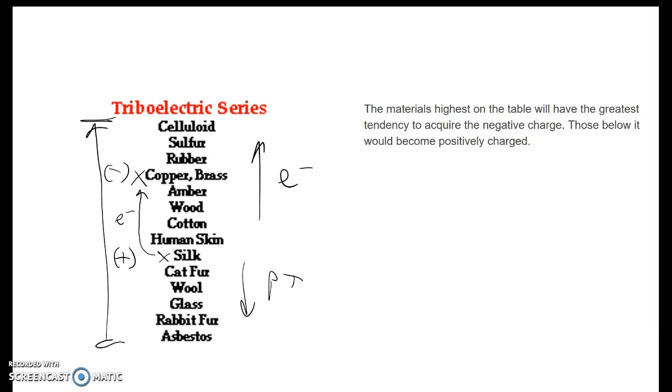Just like in the balloon and hair example, the balloon is made out of rubber. If we rub that on cat fur, which is the closest thing to hair on this list, since cat fur is below rubber, rubber is going to develop a negative charge because it wants the electrons, while cat fur will stay positive. The higher up you go, the greatest tendency to acquire electrons or negative charge, and that's called the triboelectric series.